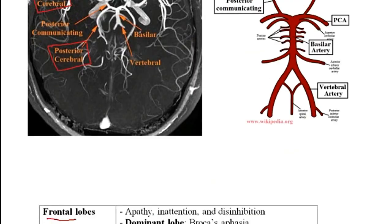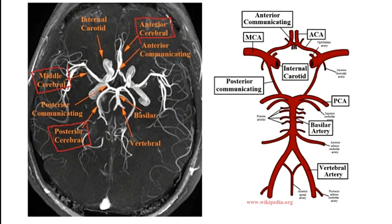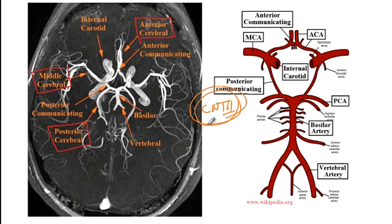One final point is that aneurysms in the circle of Willis can also affect cranial nerve 3 and cause cranial nerve 3 palsy. The question is: aneurysm of which artery is associated with cranial nerve 3 palsy? Cranial nerve 3 passes from under the posterior cerebral artery and runs along the path of the posterior communicating artery. Therefore, aneurysms of the posterior communicating artery commonly affect cranial nerve 3 and cause cranial nerve 3 palsy. There are also reports of basilar artery and carotid artery aneurysms causing this, but it is most commonly from the posterior communicating artery.